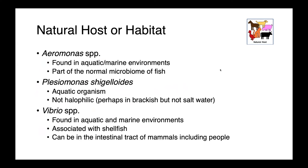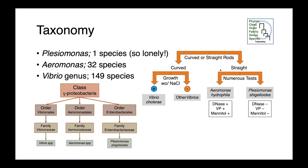Vibrio is found in both aquatic and marine environments, and we associate it primarily with shellfish. It can be in the intestinal tract of mammals, including people, where it can be a colonizer and also cause a very severe disease. These three genera are really only related to each other at a very high taxonomic level — they're in the same bacterial class; they're all gamma proteobacteria. The genus Plesiomonas only includes one species, Plesiomonas shigelloides, and it's actually found within the Enterobacteriaceae family along with E. coli.